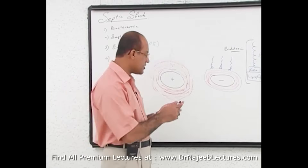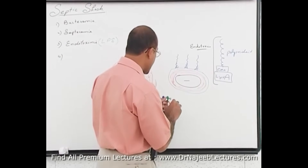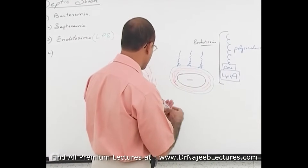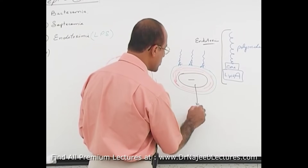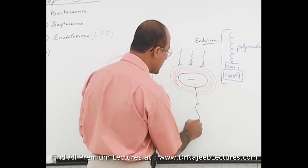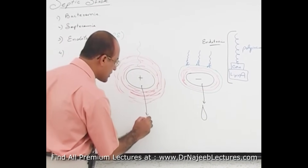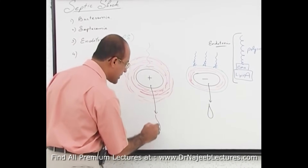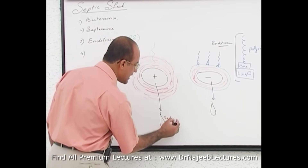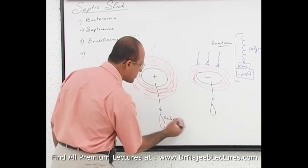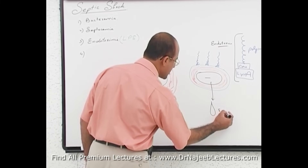Exotoxins, in contrast, are released by living bacteria. Exotoxins are not an integral part of bacterial structure — they are secreted by the bacteria while alive. Importantly, exotoxins can be released by gram-negative as well as gram-positive bacteria.